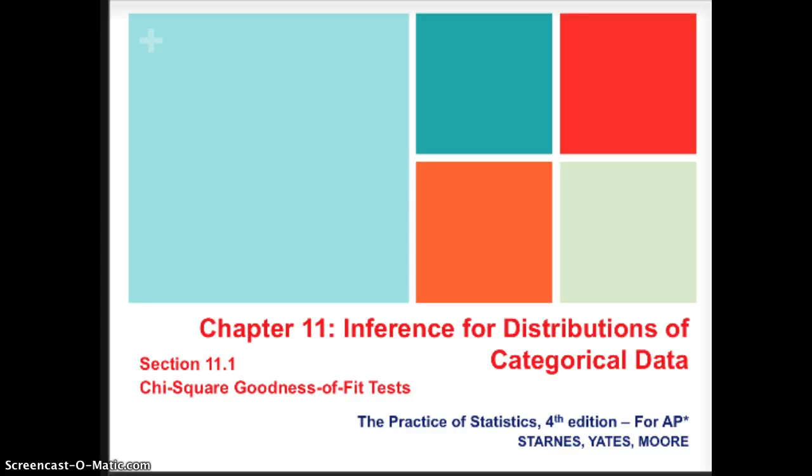Hello, AP Statistics students. This is Ms. Koken. We're in Chapter 11 now, and we're going to be talking about inference for categorical data.